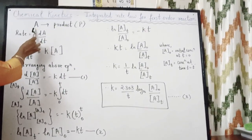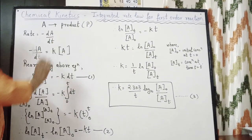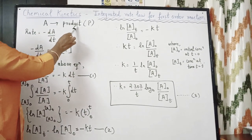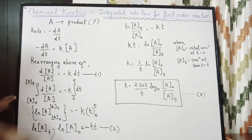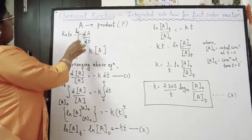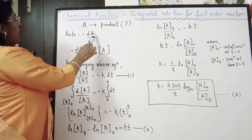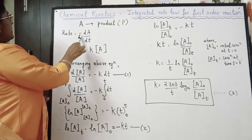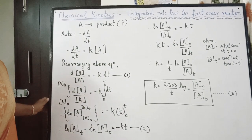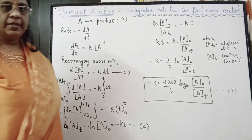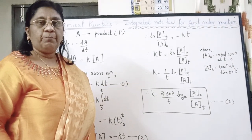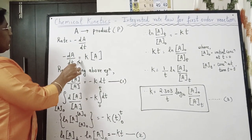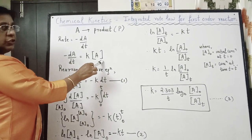Consider the reaction A gives P, where A is the reactant and P is the product. The rate of reaction can be written as: rate = -d[A]/dt. The negative sign indicates that the concentration of the reactant decreases with time T. Therefore, -d[A]/dt = K[A].